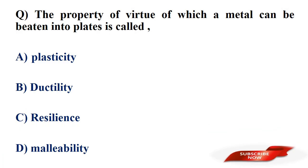The property by virtue of which a metal can be beaten into plates is called? Options: plasticity, ductility, resilience, malleability. Answer: option D, malleability. The property by virtue of which a metal can be beaten into plates is called malleability.